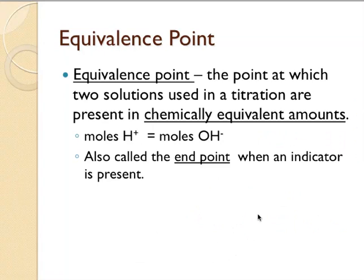On a curve, titration curve, you'll have an equivalence point, and that's the point at which the two solutions are in chemically equivalent amounts, meaning the moles of hydronium ion, that H+, equals the moles of the hydroxide. It is also called an endpoint when an indicator is present.